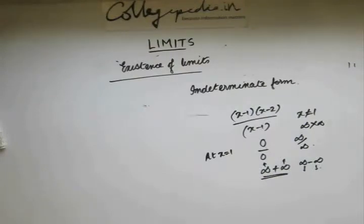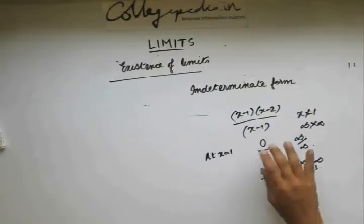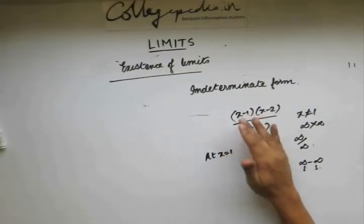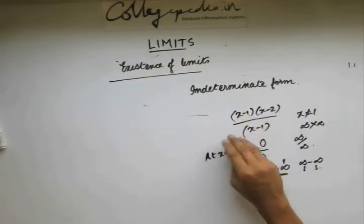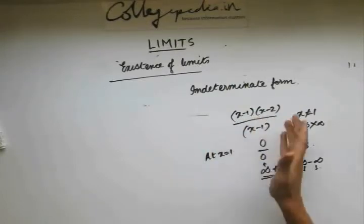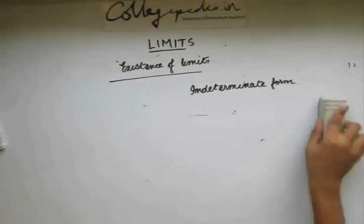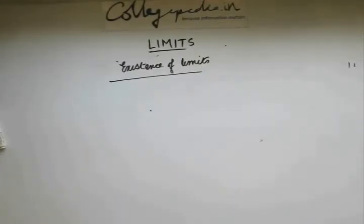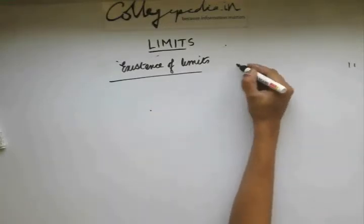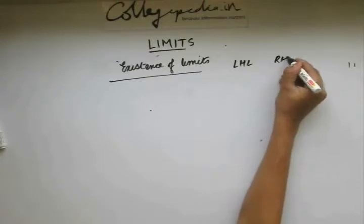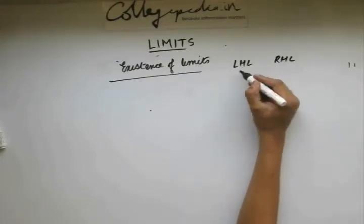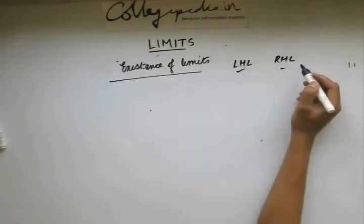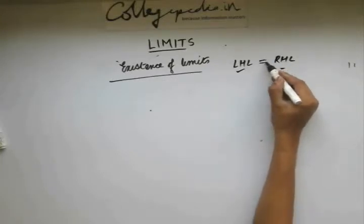In limits, what will happen is at a particular point — let's say x equals 1 — the function will take some indeterminate form. But the question will ask us to find the value of the function in the neighborhood of x, and that may or may not be an indeterminate form. Now let's take questions on finding whether the limit exists or not. To check for existence of limits, we need to check the left-hand limit and the right-hand limit. The first condition is that both of these should exist.